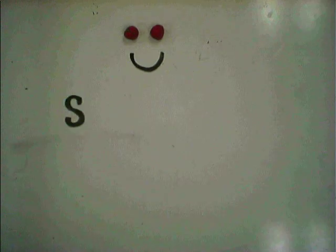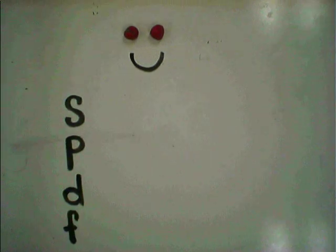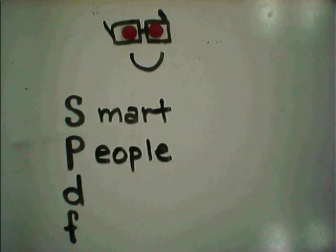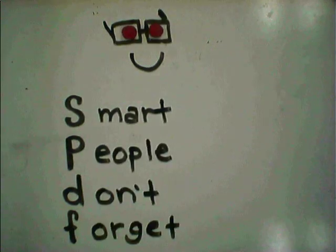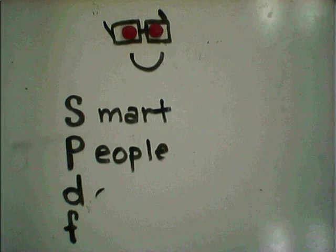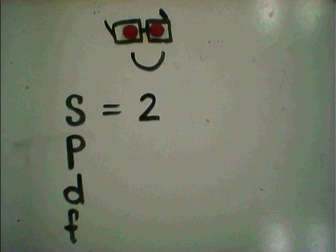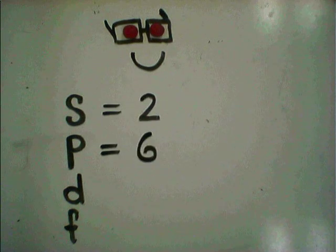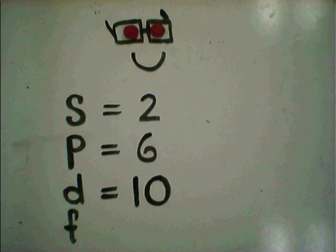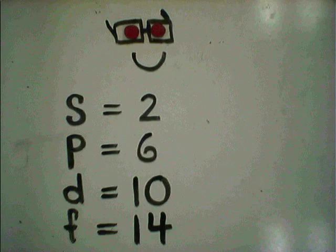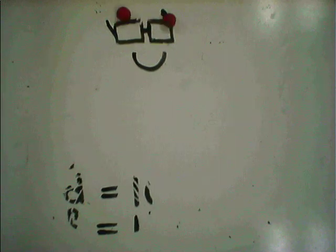Electrons like to be in certain sublevels, of which there are four: S, P, D, and F. A way to remember this is 'smart people don't forget.' Each level holds a certain amount of electrons — S holds two, P holds six, D holds ten, and F holds fourteen.